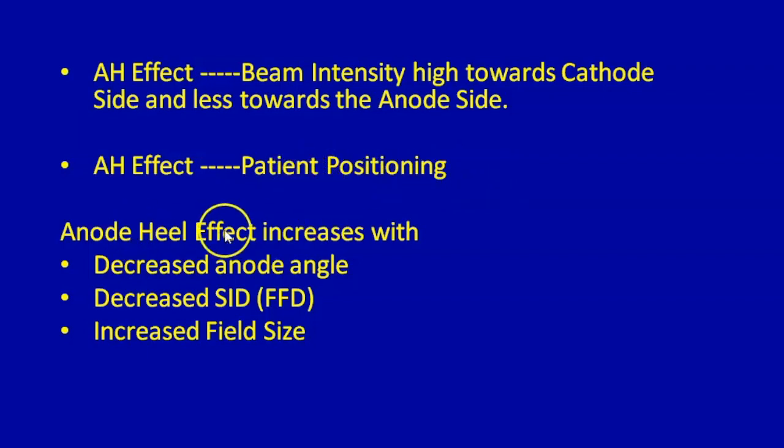Anode heel effect is inversely proportional to the anode angle and the source image receptor distance, also called as focal film distance. And anode heel effect is directly proportional to the field size. That is, if the field size increases, the anode heel effect increases. Thank you.